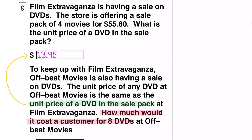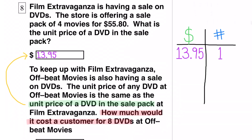I highlighted some of the important information. The unit price of a DVD in the sale pack at Film Extravaganza is $13.95. So I've made a table, and since we know the unit price, I started the table with 1 DVD with a cost of $13.95.